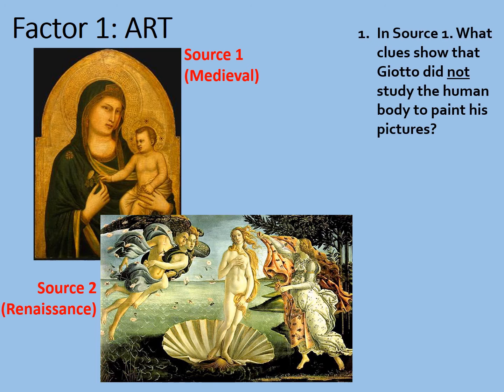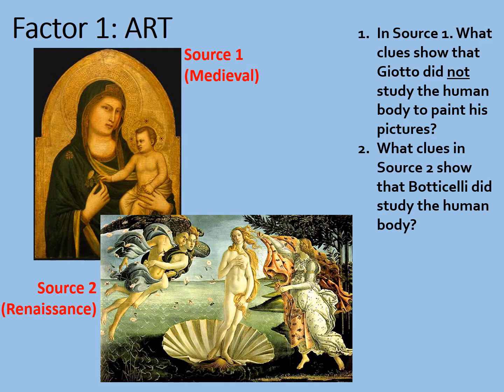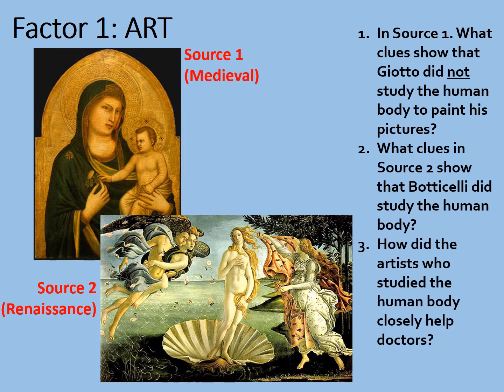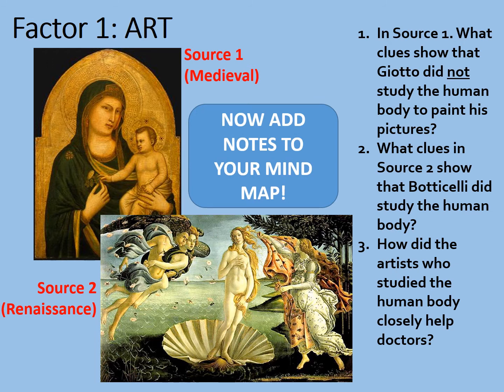On our mind maps, we can take some notes from this. Question one: what clues show that Giotto did not study the human body to paint his pictures? Question two: what clues in source two show that Botticelli did study the human body? And question three: how did artists who studied the human body closely help doctors? Bear in mind that by studying the human body closely, they are doing something that doctors also do — look at the body and diagnose it, or in this case try to get it realistically reproduced in a piece of artwork, whether sculpture or painting. Add notes to your mind map and pause the video.